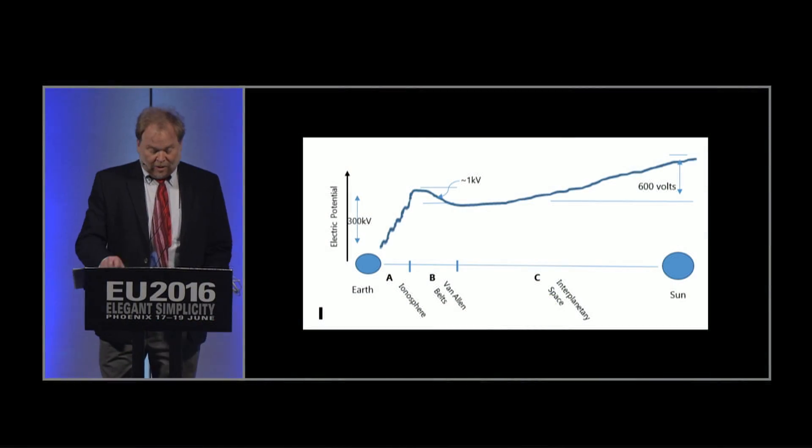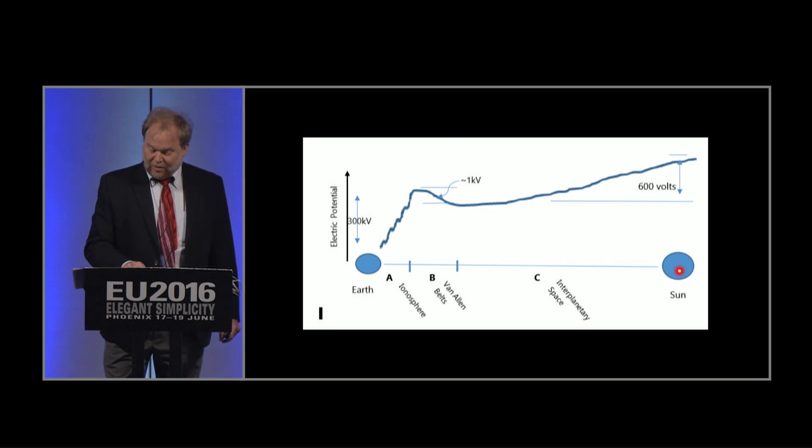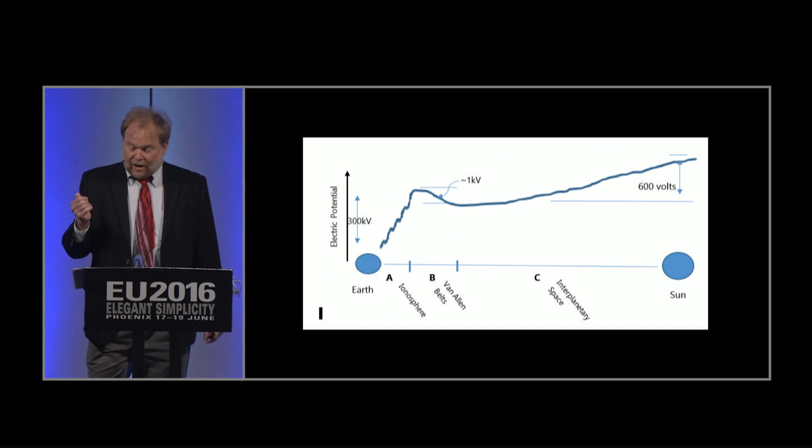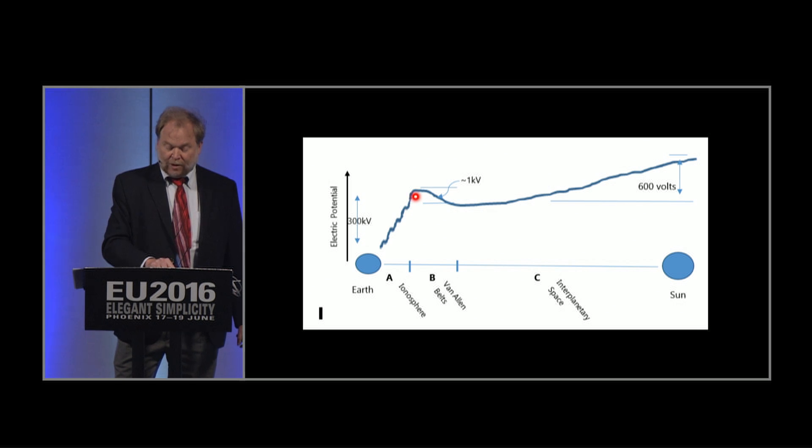So what you're looking at here is a proposed shape for the electrical potential between the Sun and the Earth, actually between any star and any planet. Now, you're not going to see this diagram in any astrophysical literature. The Earth over here, the Sun over there, a lot of space in between here. And this blue line is a proposal, an idea, a sketch for how the electrical potential looks between a star and a planet. As one moves away from the planet, a very steep rise of a lot of voltage that's wavy, goes up in steps, then a little bit of a drop-off, and then a slow rise over great distance back up to the star.